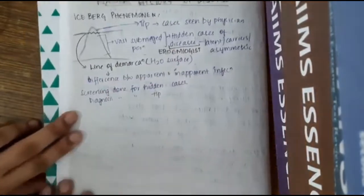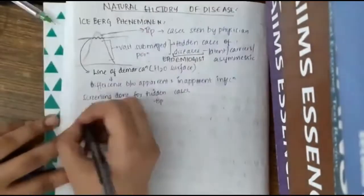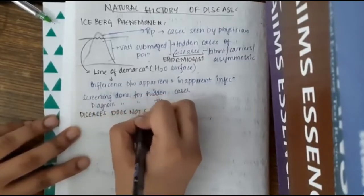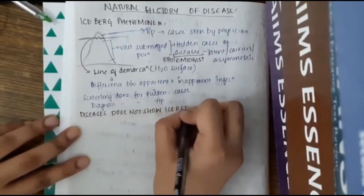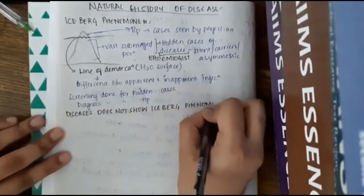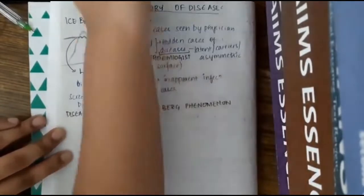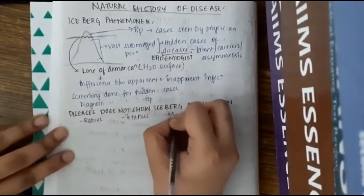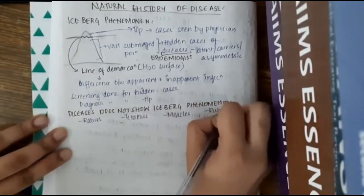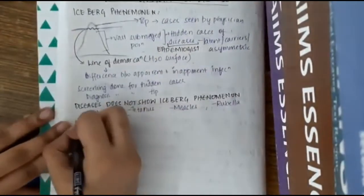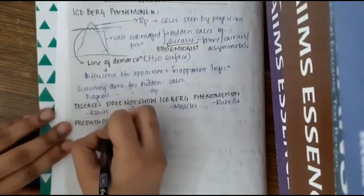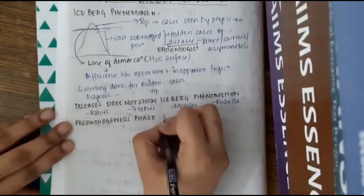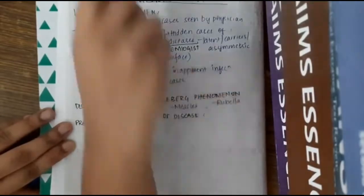One important one-liner: diseases which do not show iceberg phenomenon include rabies, tetanus, measles, and rubella. Rabies, tetanus, measles, and rubella do not show iceberg phenomenon — all cases are expressed or exposed.